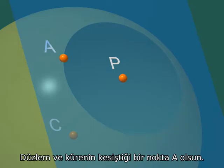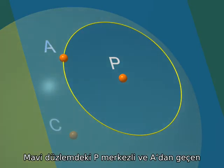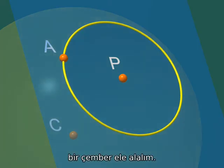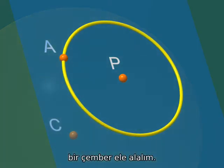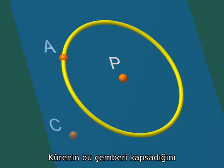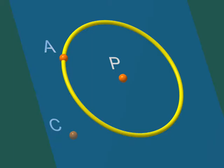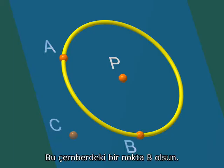Let A be a point which is on the sphere and the plane. Consider the circle in the blue plane with centre P and that goes through A. We will prove that this circle is contained in the sphere.